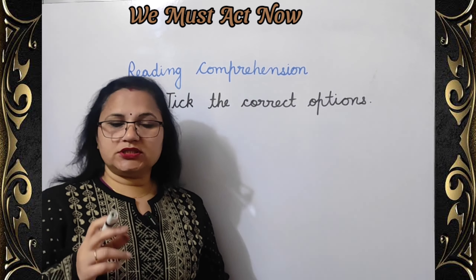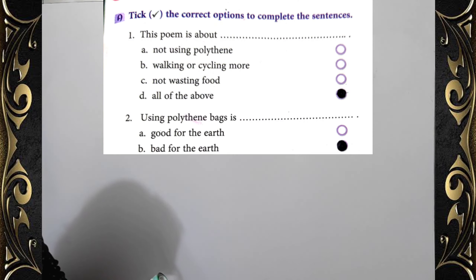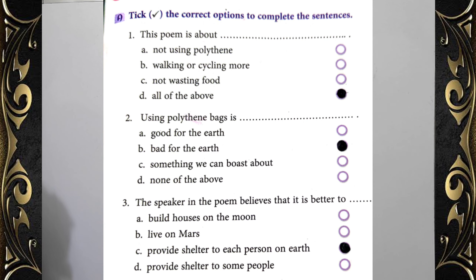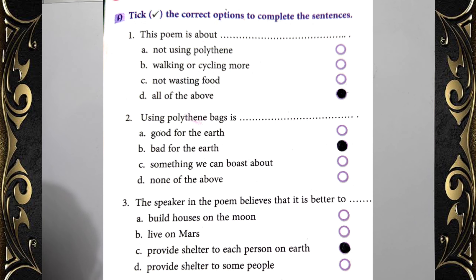Number one: This poem is about — correct option is D, all of the above: not using polythene, walking or cycling more, not wasting food. Number two: Using polythene bags is — correct answer is B, bad for the earth.